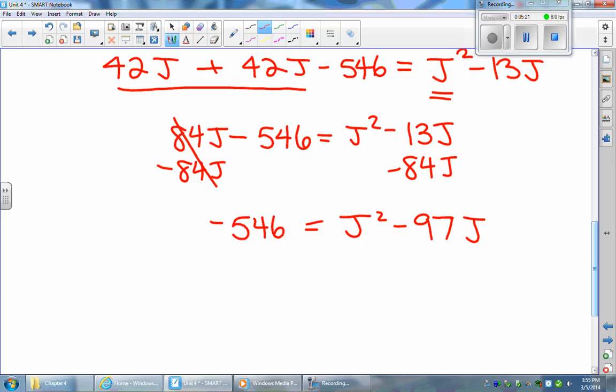So I'm left with j squared minus 97j is equal to negative 546. Now I'm going to bring the 546 over because it's a negative. I'm going to add 546 to both sides so that I'm left with zero now on the left. Zero is equal to j squared minus 97j plus 546.